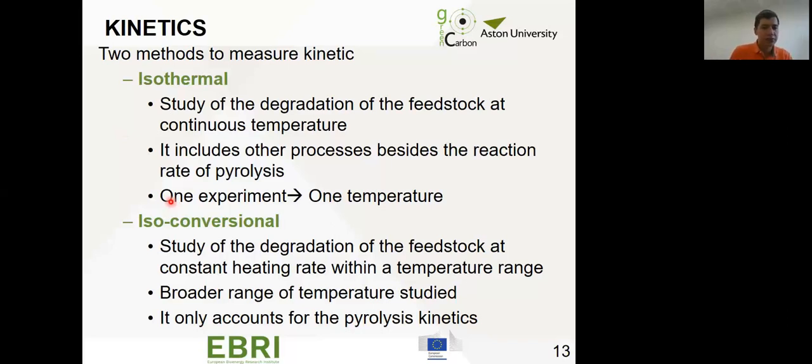On the other side, we've got isoconversional, which means study the degradation at a constant heating rate within a temperature range. In that way we achieve broader range temperatures and it only accounts for pure kinetics. The isothermal is more realistic but takes into account other processes. Since we wanted a wider conversion and only wanted to study pure kinetics, we chose to use the isoconversional method.